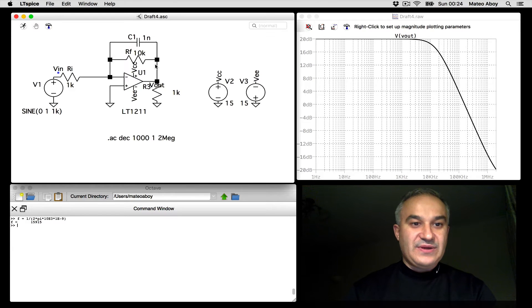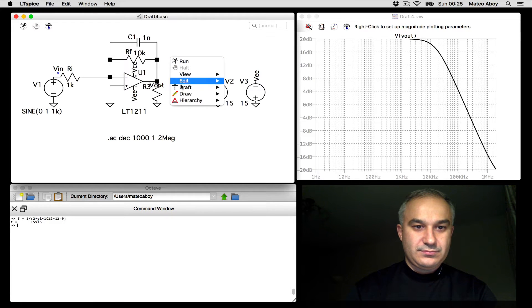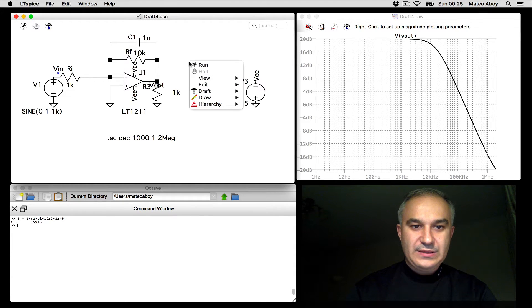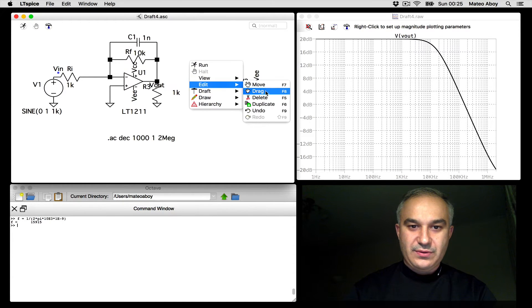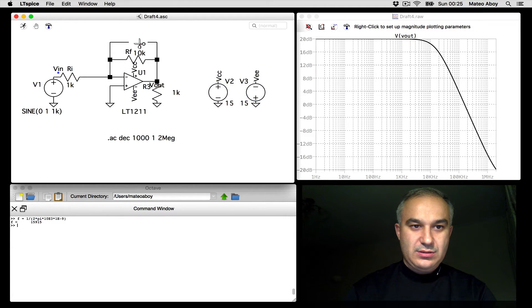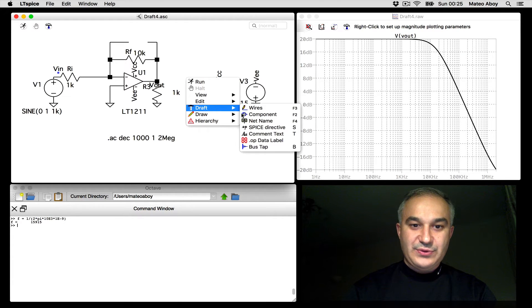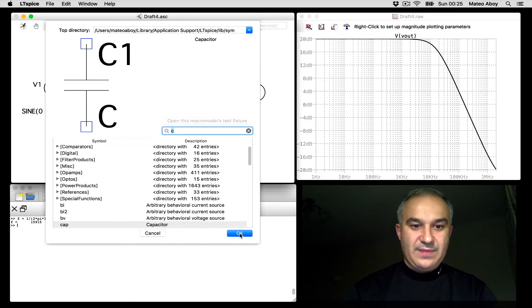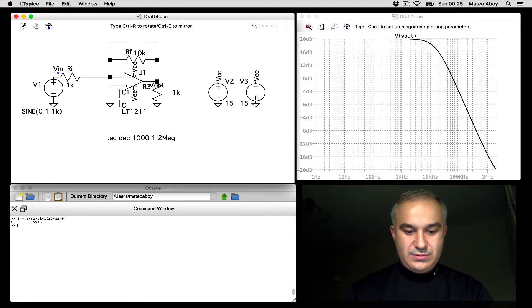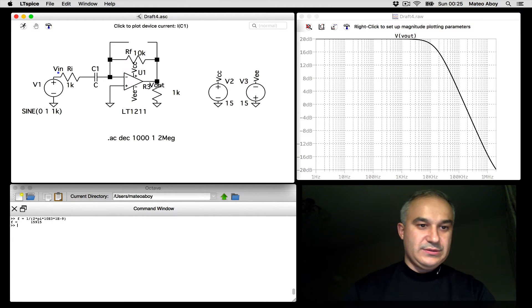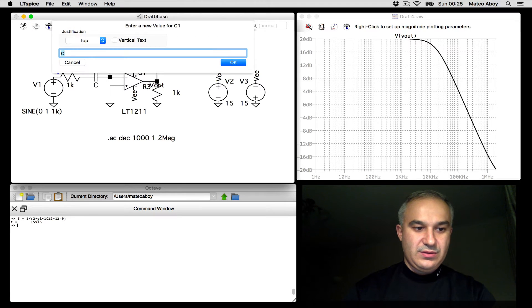Now, if we want to create a high-pass filter, we can just put a resistor here. And so that's what I'm going to do right now. I'm going to cut my capacitor there and place a capacitor right here. So I'm going to do like a 1μ.